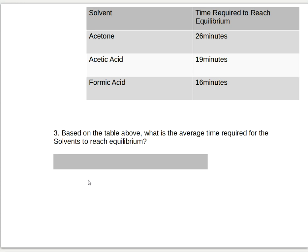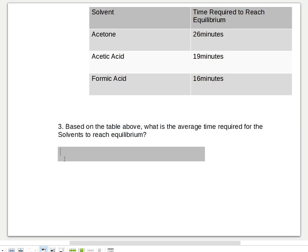Number three question, still based on the table above here, what is the average time required for the solvents to reach equilibrium? So how to answer it is just add all the minutes here: 26 minutes plus 19 minutes plus 16 minutes, and divide it by three. So you have to write your answer here, and the answer is 20.3.